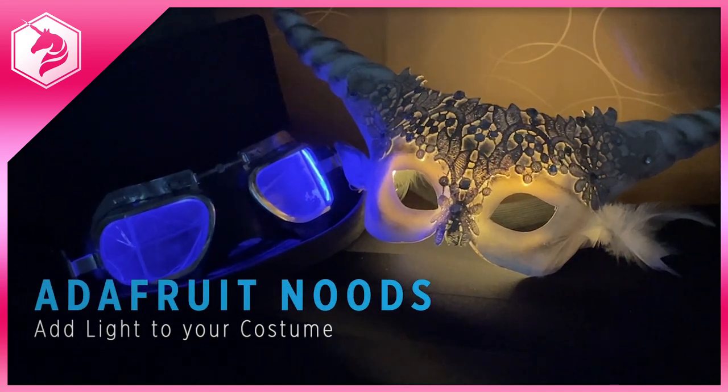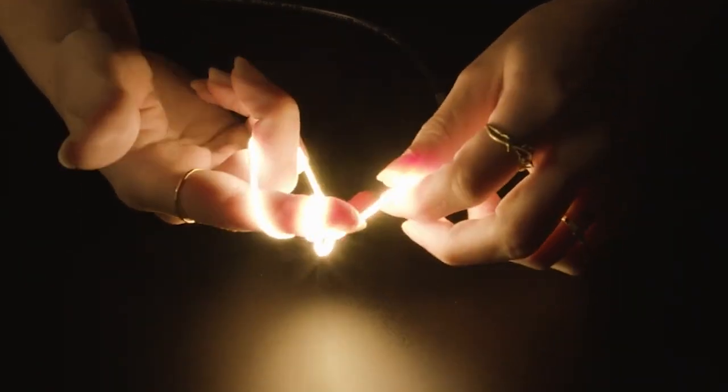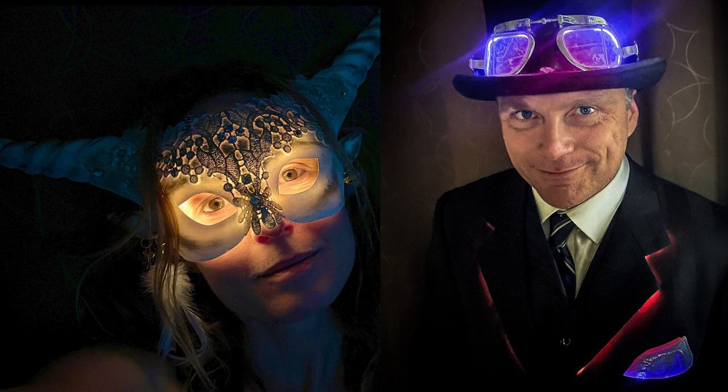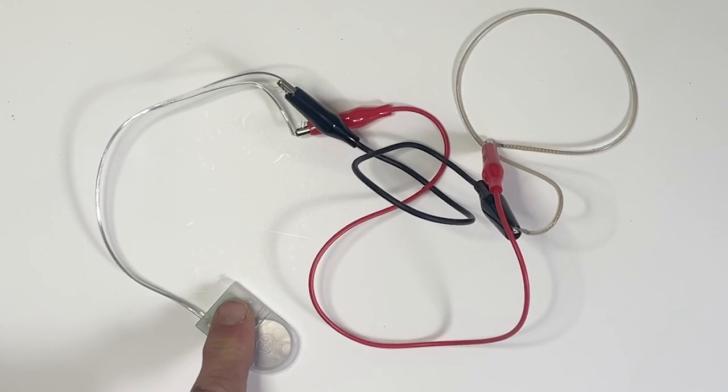Add light to your costume using Adafruit Nudes, a flexible, glowing light noodle. For a single nude, all you need is a single coin cell battery.